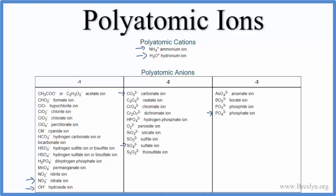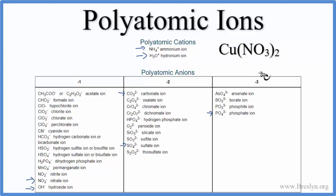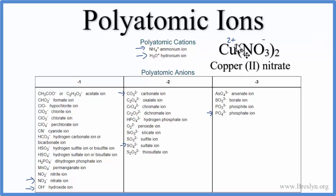Let's look at what happens when a polyatomic ion is attached to a transition metal. We have iron attached to SO4. If we know the charge on SO4, we can figure out the charge on the iron. Looking up sulfate, it's 2-, so the iron must be 2+ for this to be a neutral molecule — we call this iron(II) sulfate. For Cu(NO3)2, copper is a transition metal so we don't know its charge, but nitrate, NO3, has a 1- charge. With two nitrates, the total is 2-, so the copper must be 2+, making this copper(II) nitrate. The two reflects the positive charge on the transition metal.